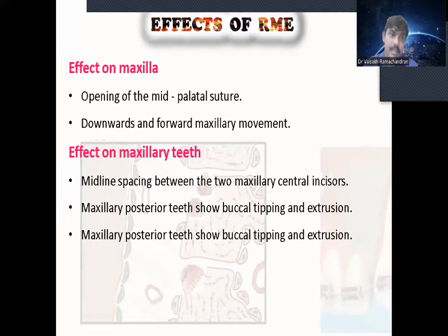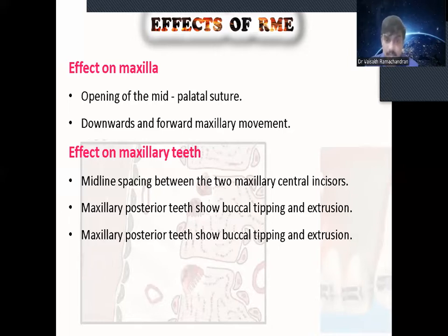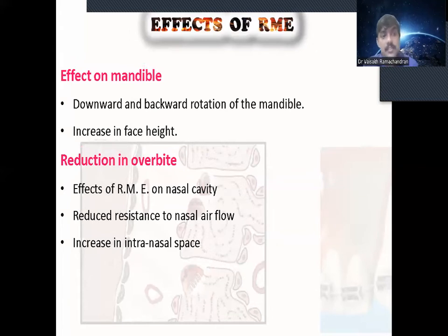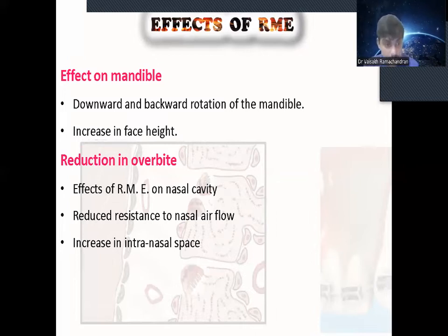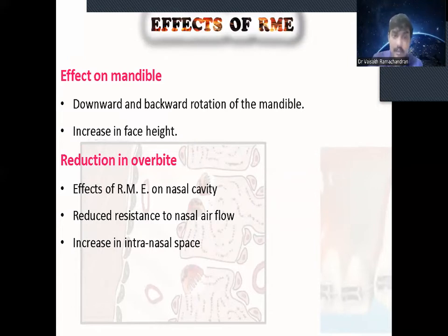What are the effects of RME? The first effect is on the maxilla — it opens the mid-palatal suture and helps in downward and forward maxillary movement. The effect on maxillary teeth: we can see a midline spacing or diastema between the two maxillary central incisors, and the maxillary posterior teeth show buccal tipping and extrusion. The effect on the mandible is downward and backward rotation, which increases facial height and reduces overbite. The effect of RME on the nasal cavity is that it reduces resistance to nasal airflow.